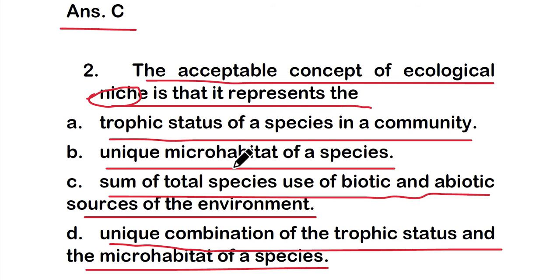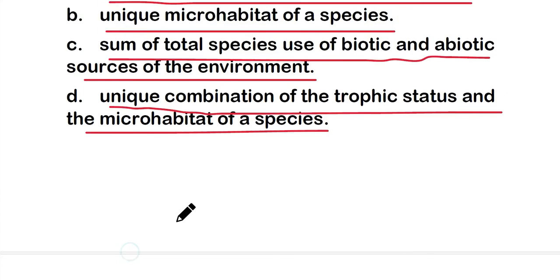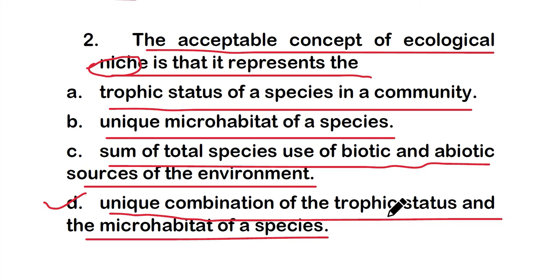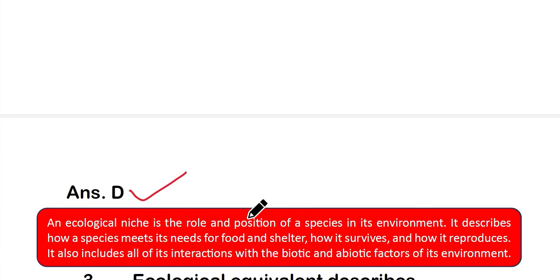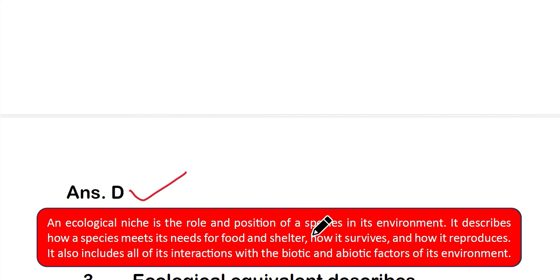The right answer is option D — it is a unique combination of the trophic status and the micro-habitat of a species. Ecological niche is the role and position of a species in its environment. It describes how a species meets its needs for food and shelter, how it survives and reproduces, and includes all interactions with biotic and abiotic factors of its environment.